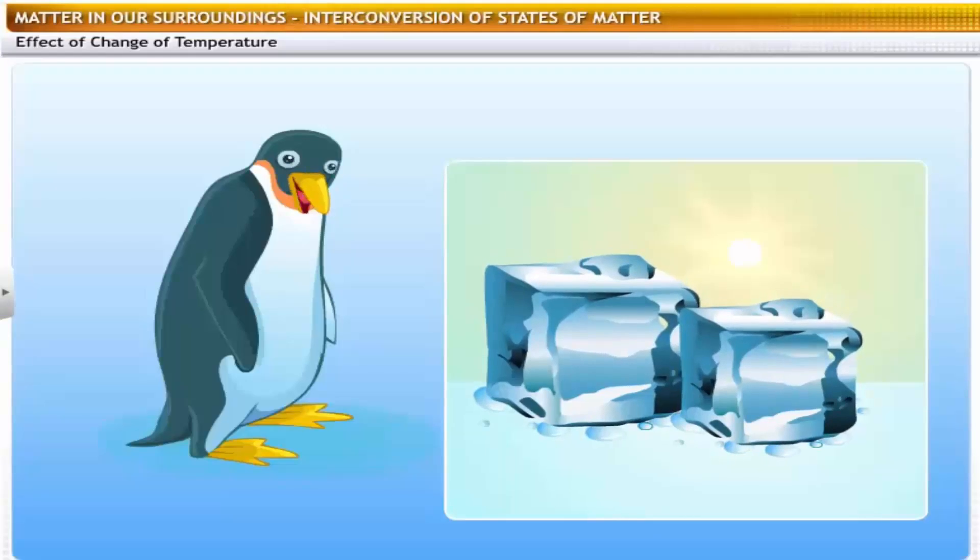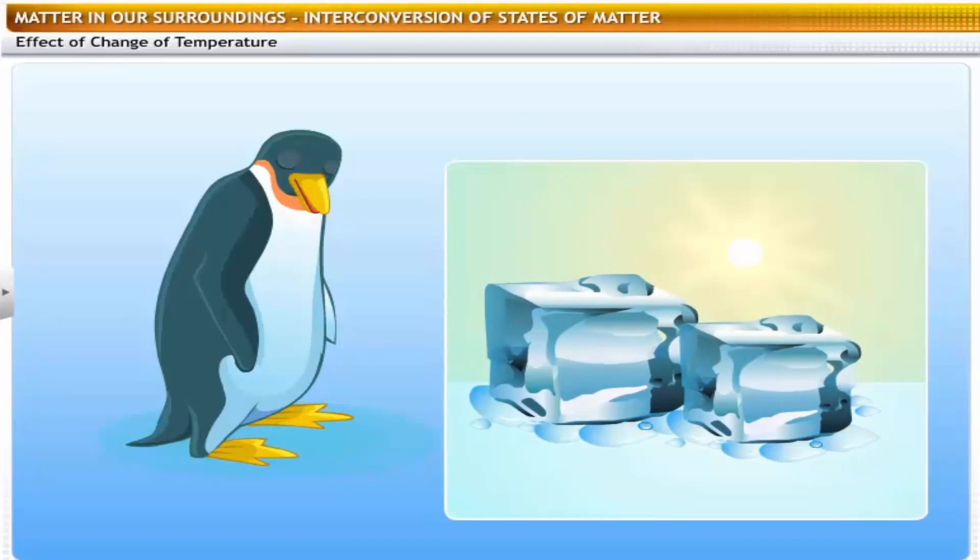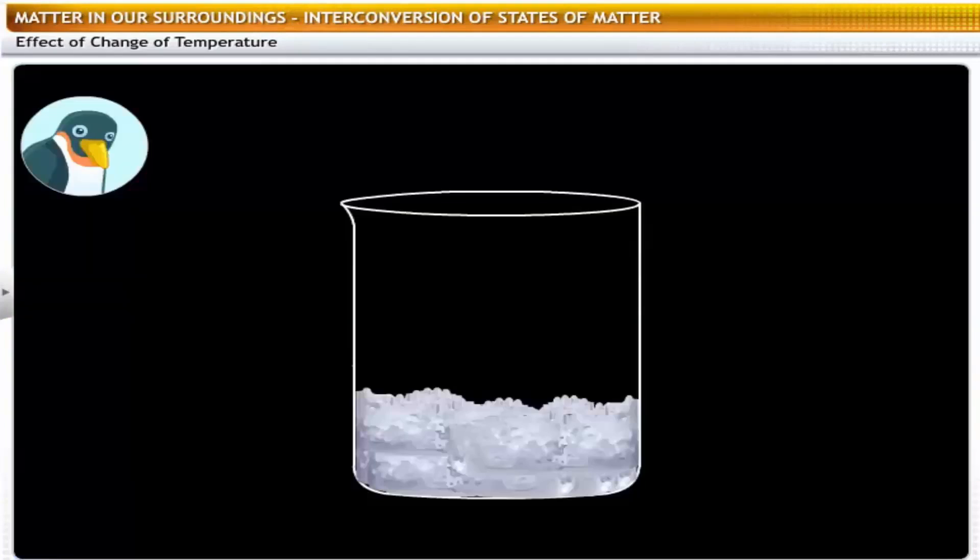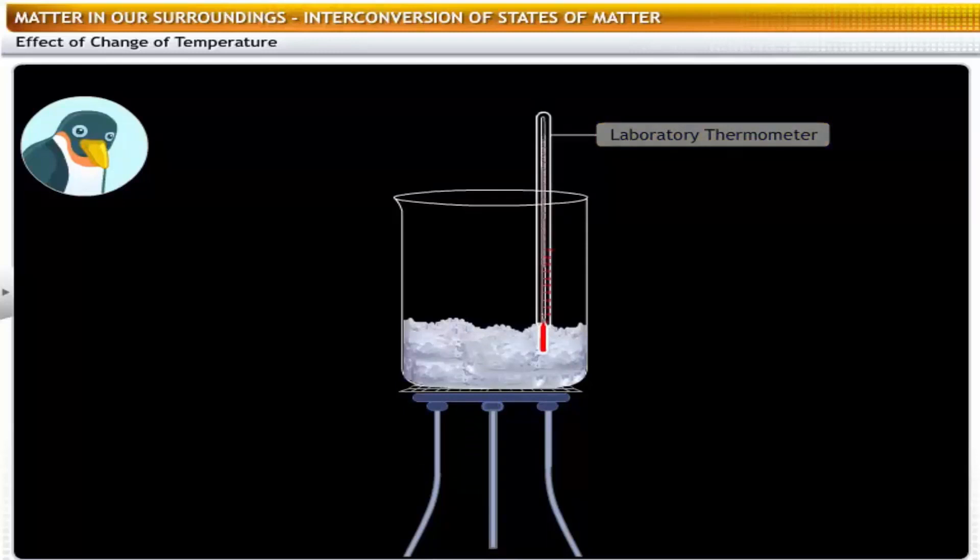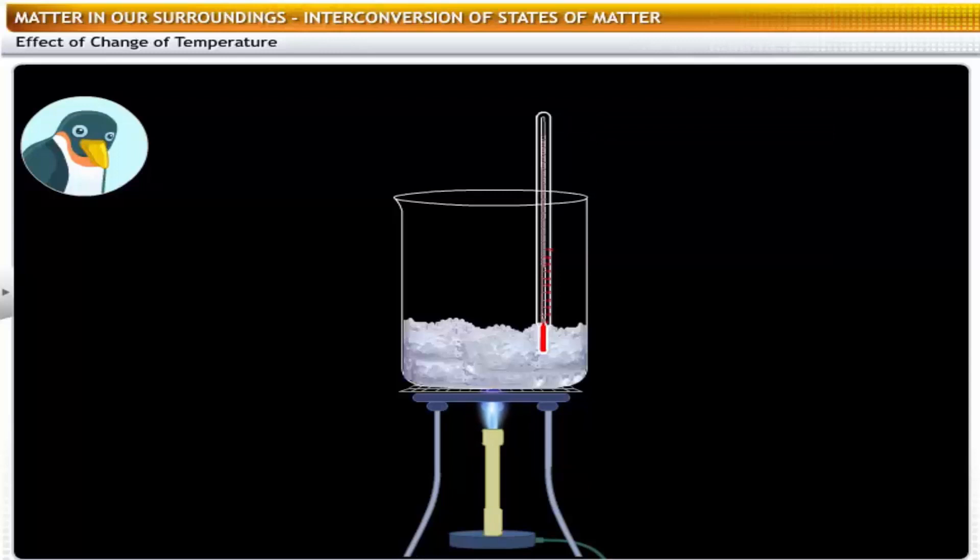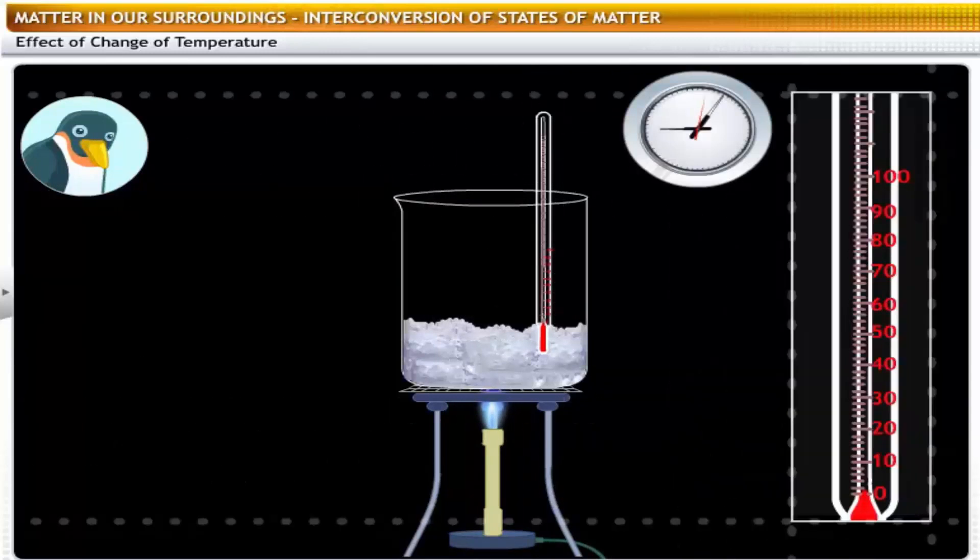I don't understand. Why does ice melt on a sunny day? To understand the melting of ice, let's perform an experiment. Take about 150 grams of crushed ice in a beaker and place it on a tripod. Next, suspend a laboratory thermometer into the ice in the beaker. Then, heat the beaker with a Bunsen burner. Remember to note down the reading of the thermometer every half minute.